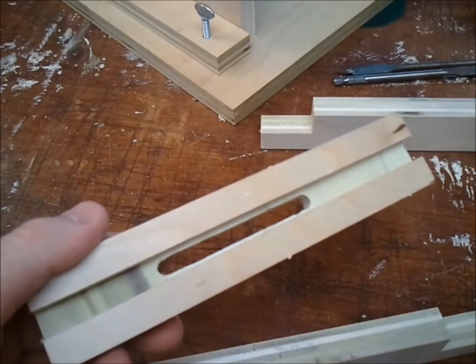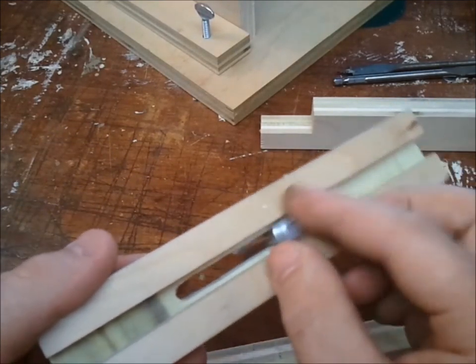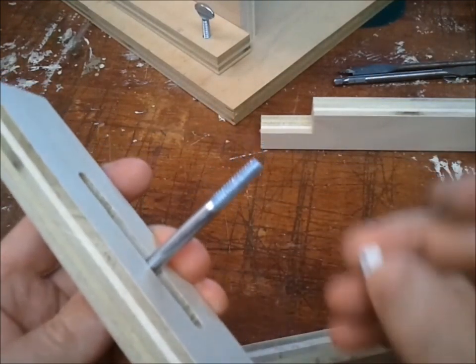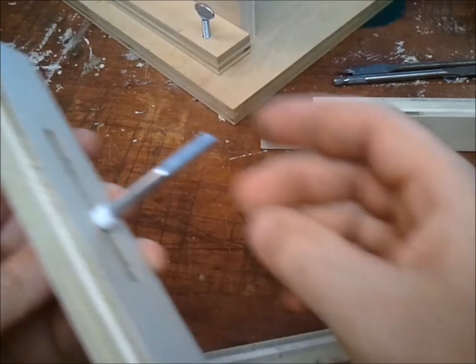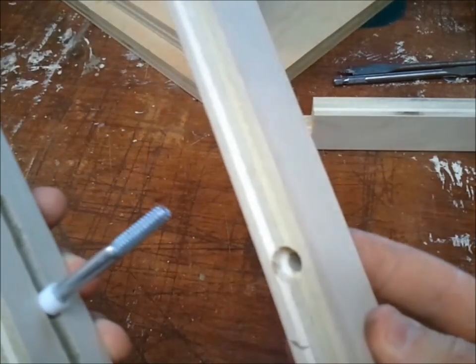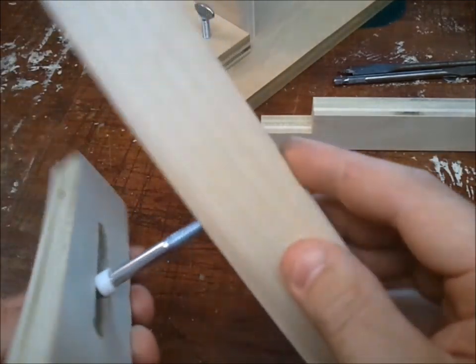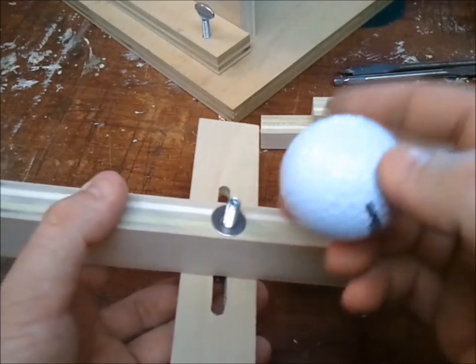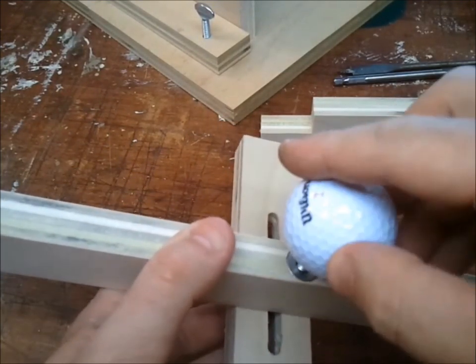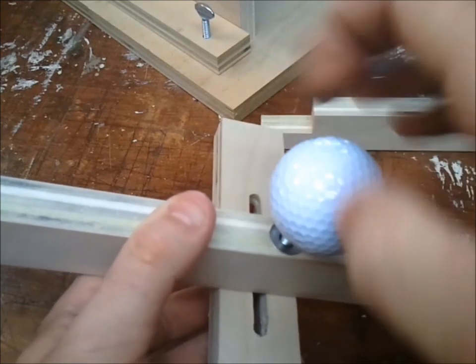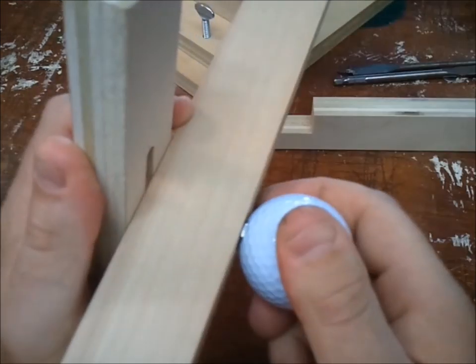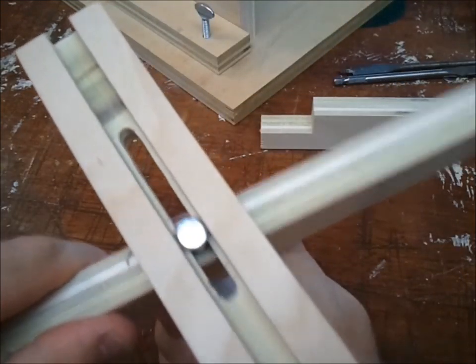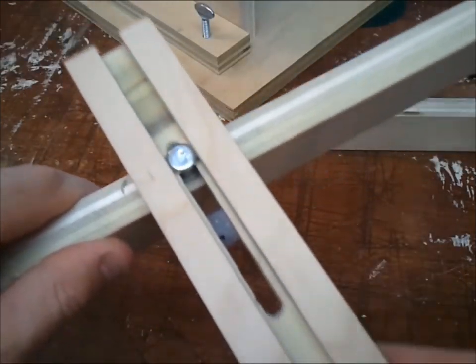Let me show you how this mechanism is going to work. Later, this is going to be routed into the base. As the golf ball is turned, it tightens the mechanism. When it's loosened, it will allow it to slide back and forth.